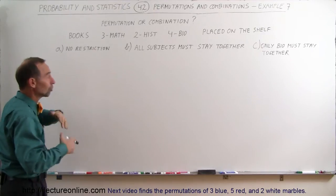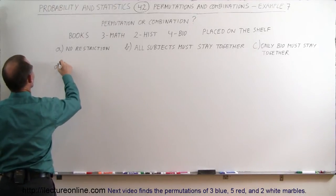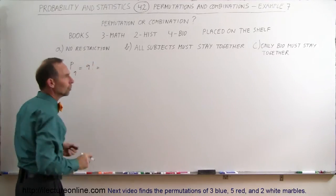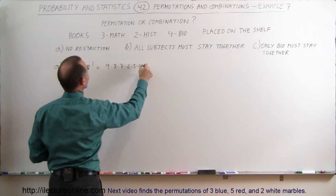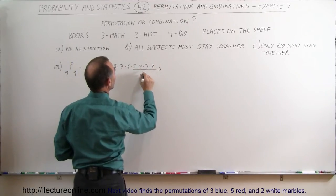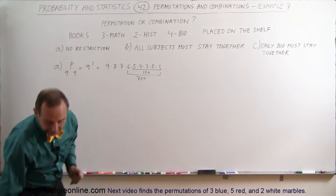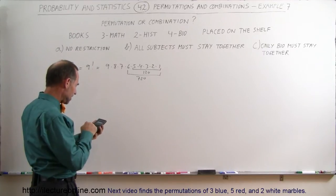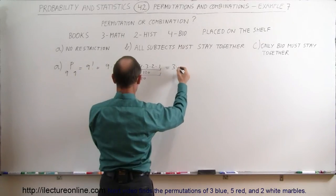For Part A, when there are no restrictions, there are nine individual books and you don't care what subject they are. So the number of permutations is nine books in nine spaces, which equals nine factorial. That's nine times eight times seven times six times five times four times three times two times one. We know that five factorial is 120, times six is 720, and then using a calculator: 720 times seven times eight times nine gives us 362,880 permutations.